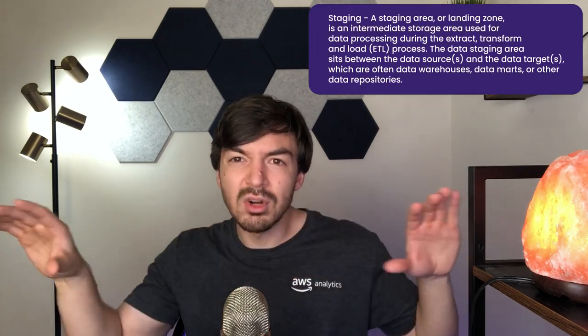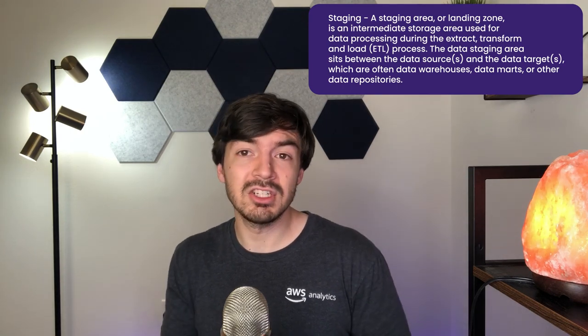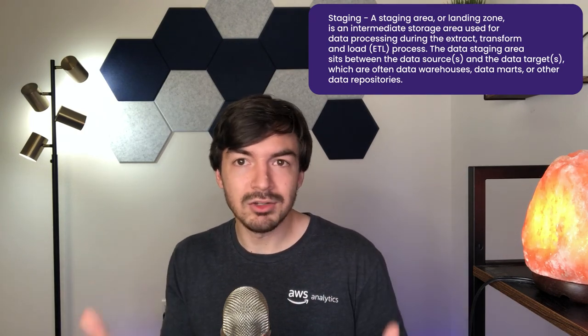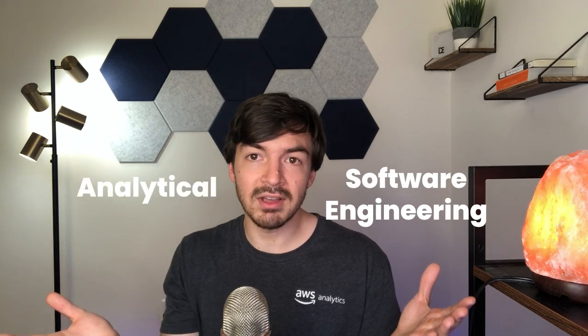Creating maybe that first and second layer of data — that first layer might be a little more raw and staging, and that second layer will be that core data set. Before doing any fancy transformations, you're really just trying to show the main transaction data and dimensional data that represents a company's day-to-day transactions. This also fits the narrative about the difference between software engineers and data engineers, where data engineers can lean more towards the software engineering side or the analytical side.